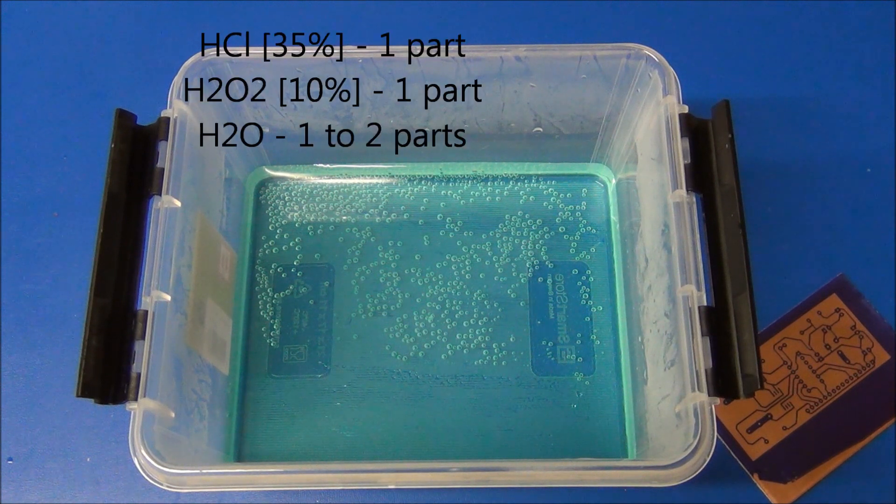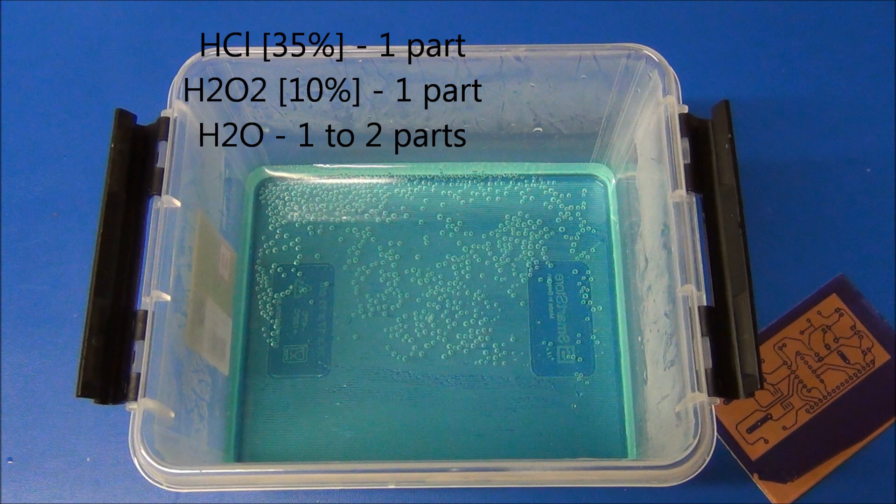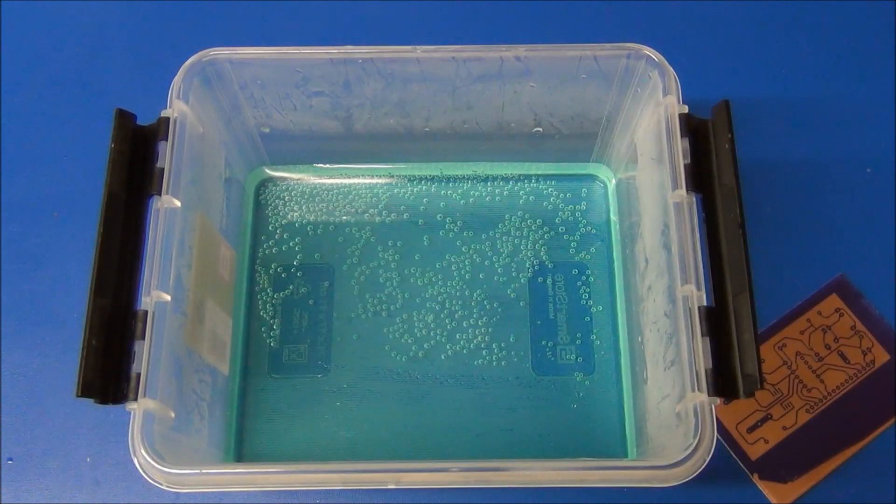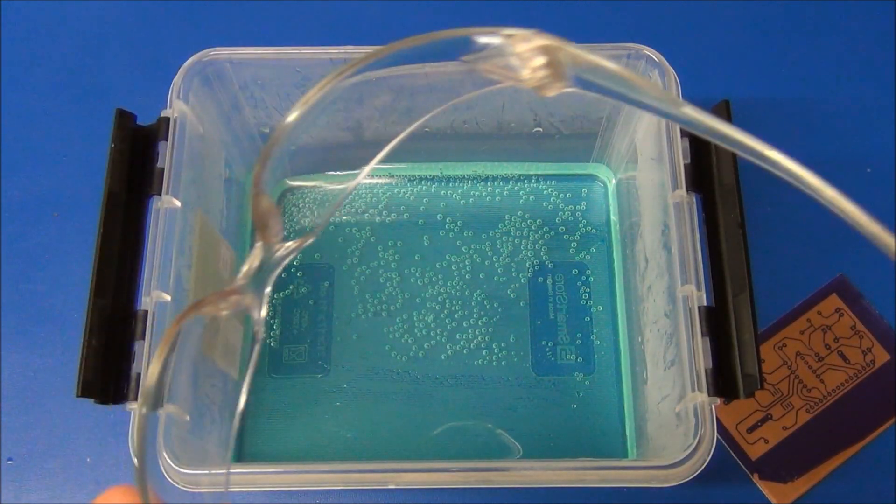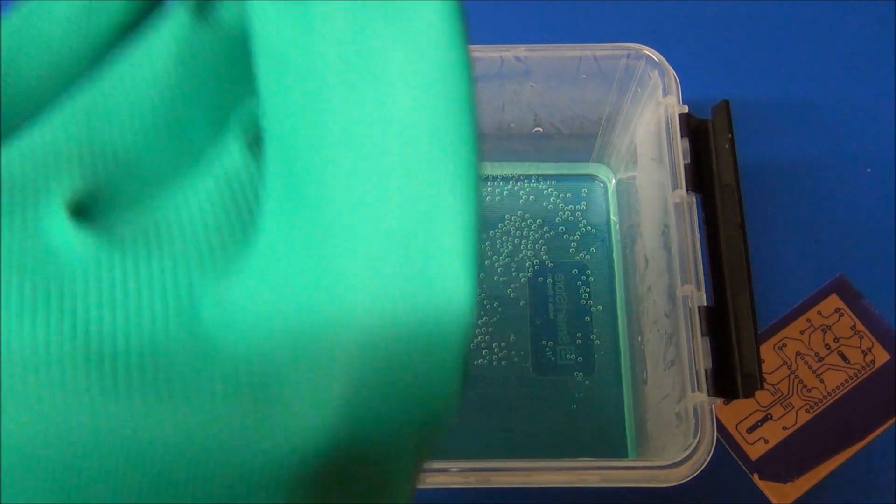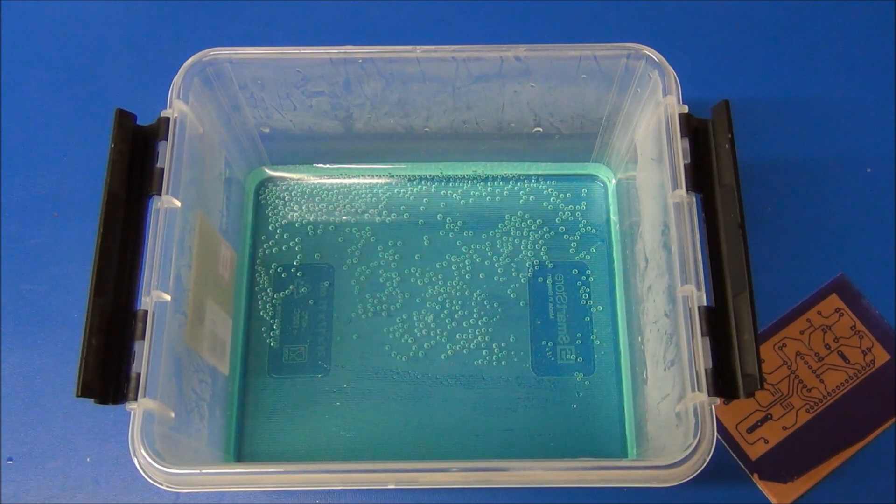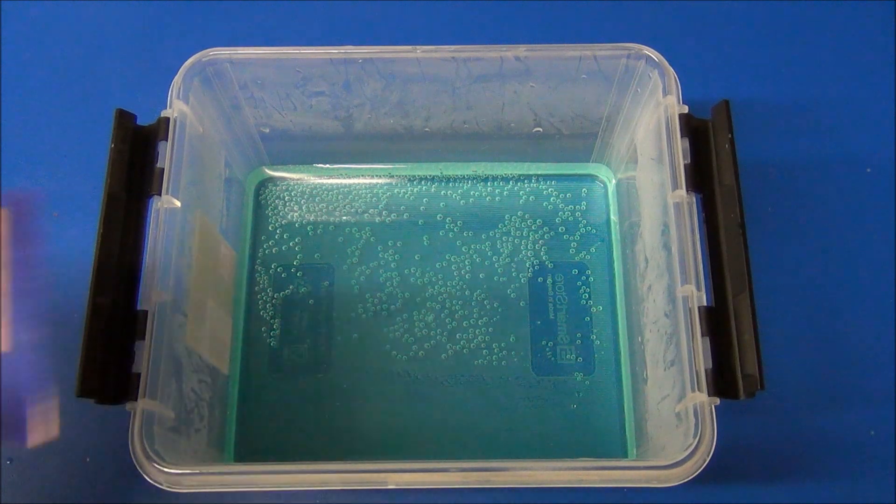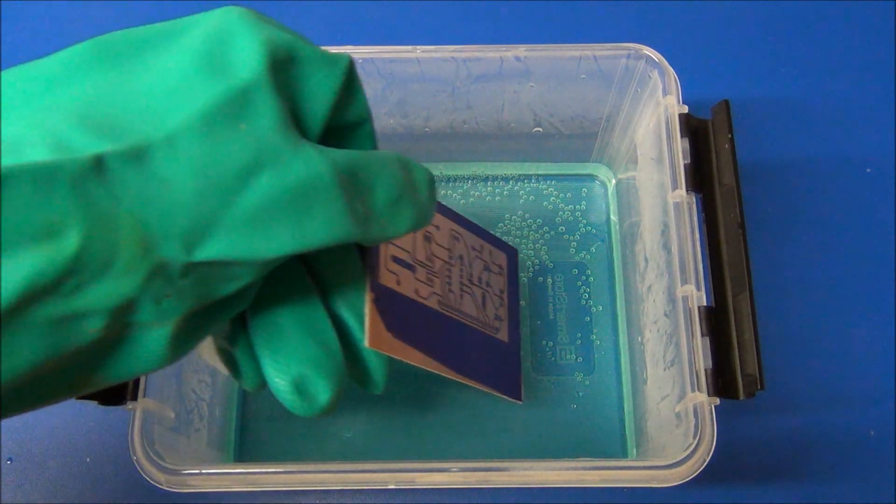To etch the board, we use a solution of hydrochloric acid and hydrogen peroxide mixed with about the same amount of water. Safety glasses, chemical gloves, please. Place your board in the solution.